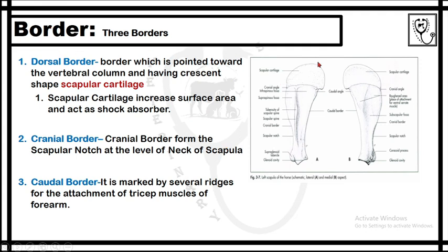There are three borders of the scapula bone: the dorsal border, which faces toward the vertebral column; the cranial border, which faces toward the head; and the caudal border, which faces toward the tail. At the dorsal border there is a crescent-shaped cartilage called the scapular cartilage. The scapular cartilage increases the surface area of the scapula bone and also acts as a shock absorber.